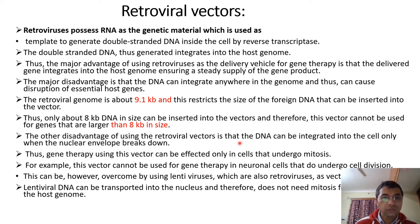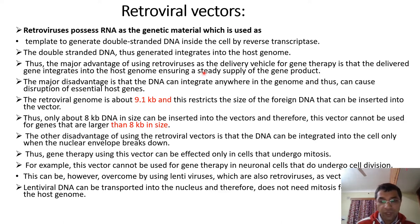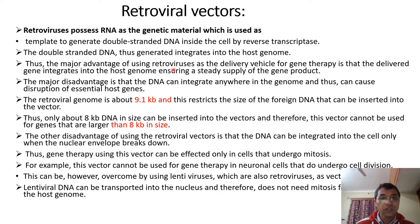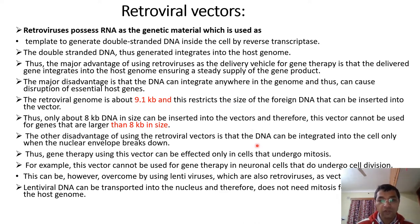Hello students, we will continue with retroviral vectors. As previously summarized, there are two types of vectors used for gene therapy: one is the viral-based vectors and the other is the non-viral based vectors. In the series on gene therapy, we will learn about virus-based vectors. There are four types of virus vectors used for gene therapy, the first being retroviral vectors.